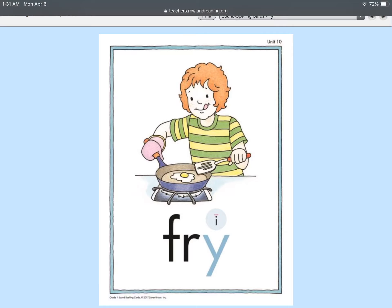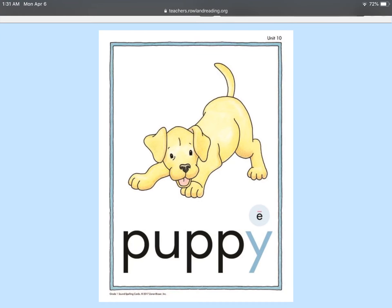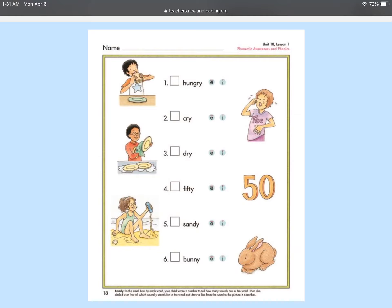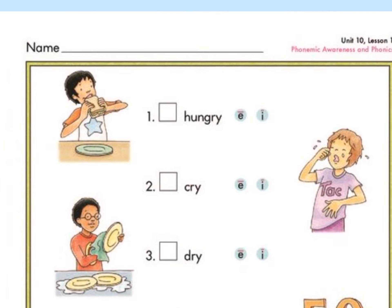This is a reminder. Fry, like fry an egg, will make the long I sound. And puppy, the cute little puppy, is going to make the long E sound at the end because there are two vowels. Let's go ahead and go on to page number 18. Let me turn my page.